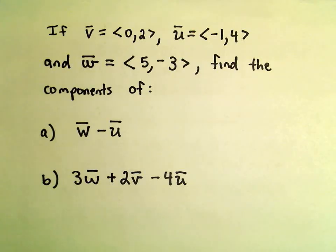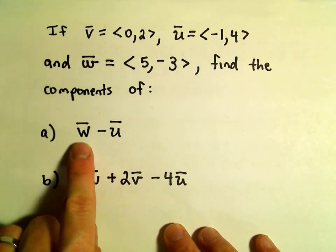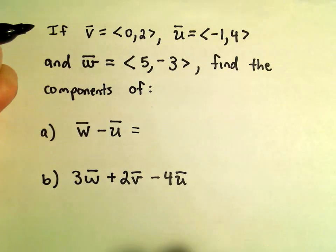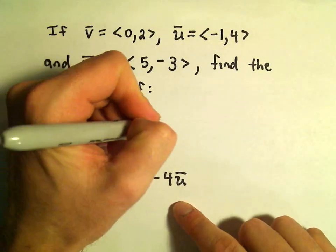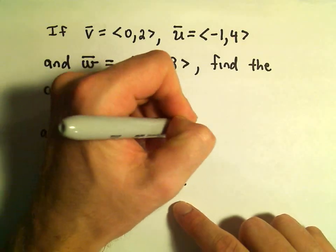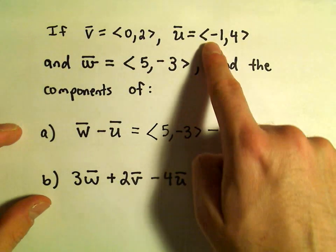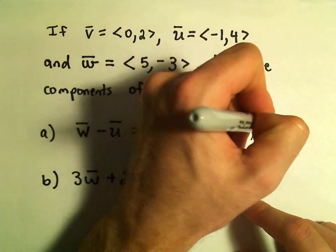So let's do part A here first. We'll do vector W minus vector U. Well, the components for vector W, we said that was 5, negative 3. And then we're going to subtract away the components of vector U, which are negative 1 and 4.